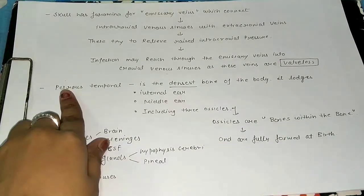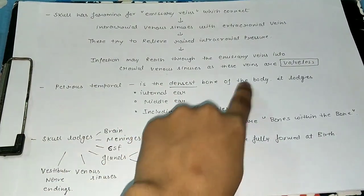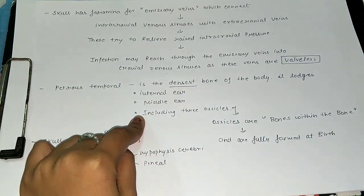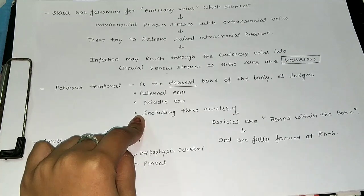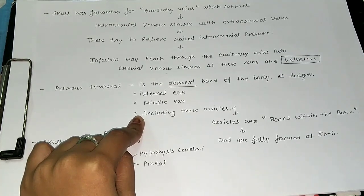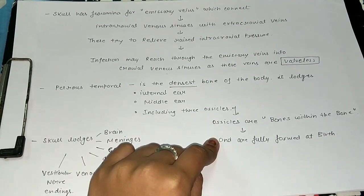Next is the petrous temporal bone. It is the densest bone of the body. It lodges the internal ear, middle ear, including three ossicles. Ossicles are the three bones: malleus, incus, and stapes. Ossicles are bones within bone and are fully formed at birth.